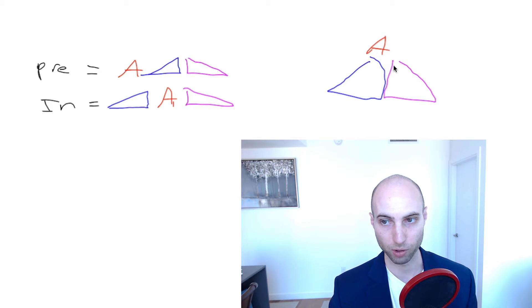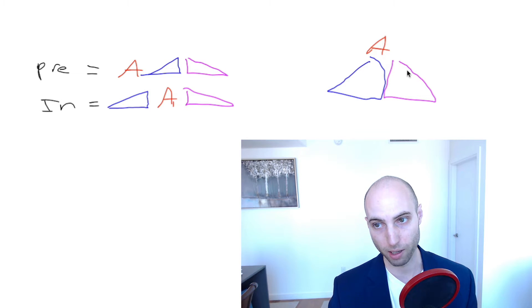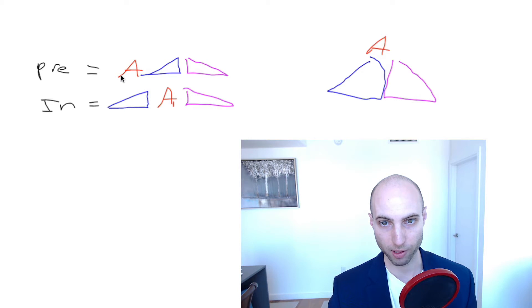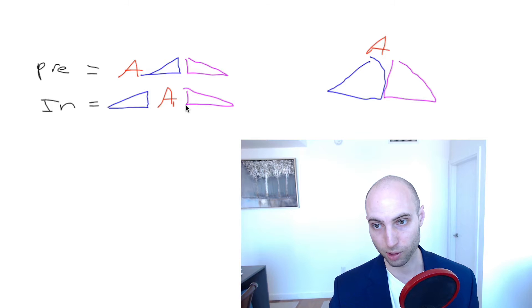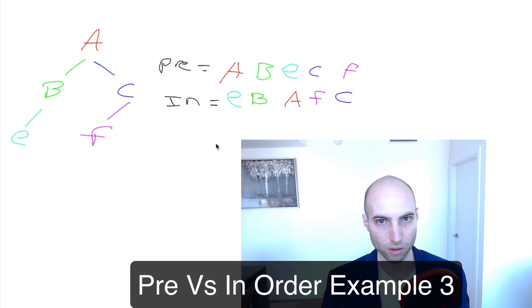These recursive subtrees are represented as blue and purple triangles. In preorder, we print A, the root node, then all the stuff in the blue, then all the stuff in the purple. In order, we first print all the left subtrees — the blue triangle — then the node itself, which is A, and then all the right subtrees represented in purple.